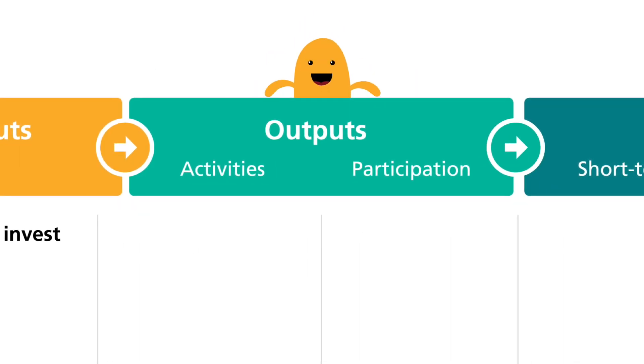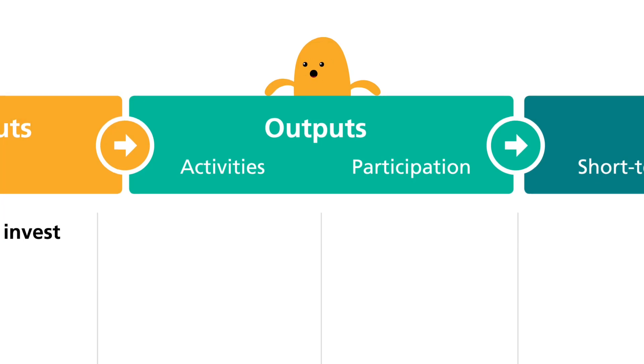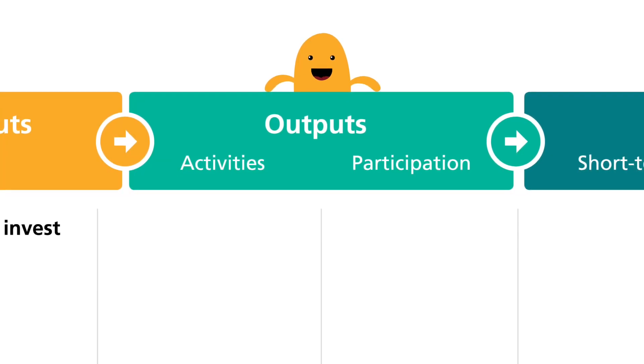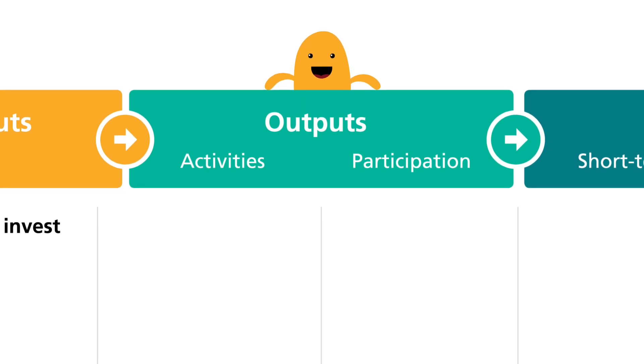Outputs are what we offer as an organization. Outputs are the activities, services, events, and products that reach our targeted audience.